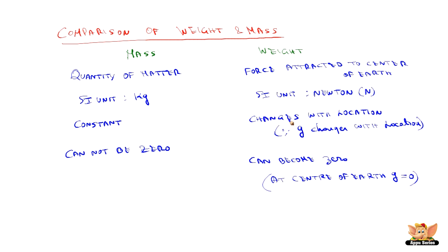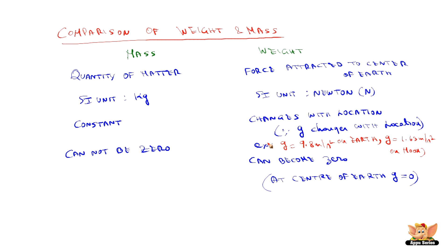Weight changes with location because g changes with location. For example, g = 9.8 m/s² on Earth, whereas g = 1.63 m/s² on the Moon. This confirms that as g changes, so does weight. This is the comparison between weight and mass.